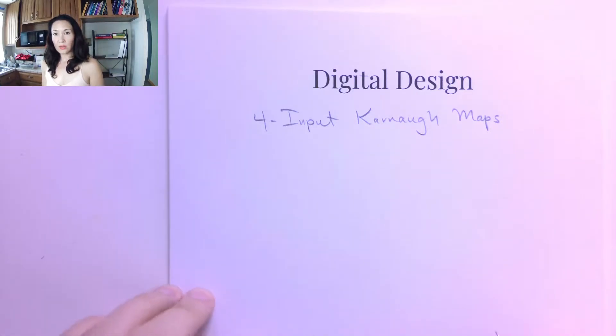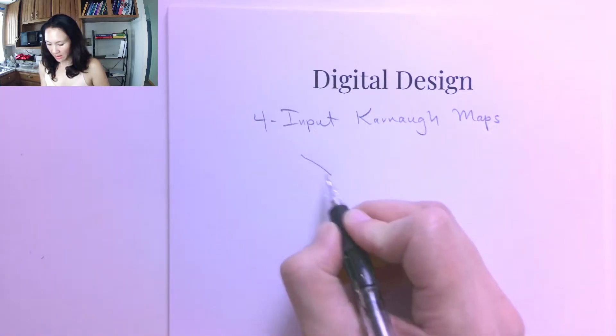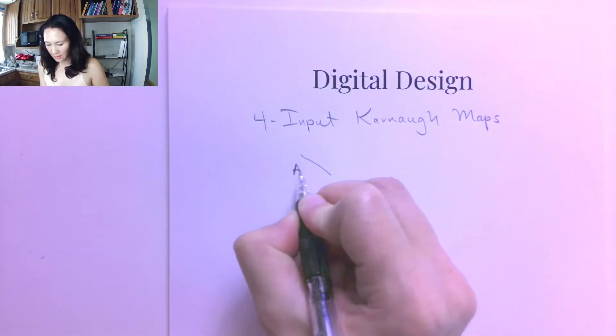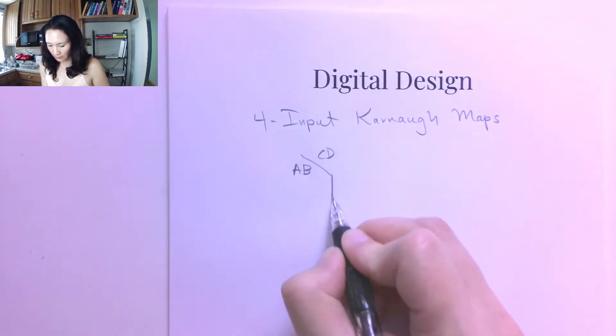Now we've seen both two and three input Karnaugh maps. I want to show you how to make a four input Karnaugh map. So for the four input Karnaugh map, I like to write this diagonal line. I put A and B over here, and I put C and D. So these are our four inputs.